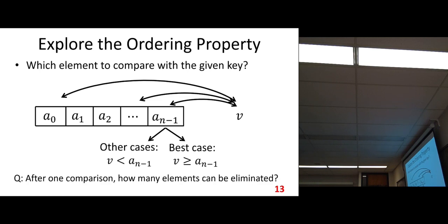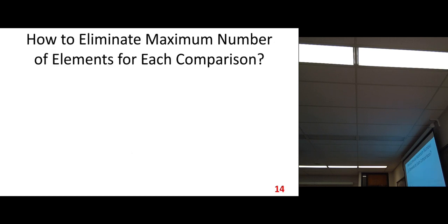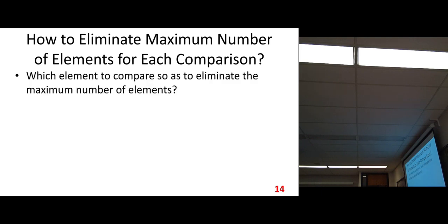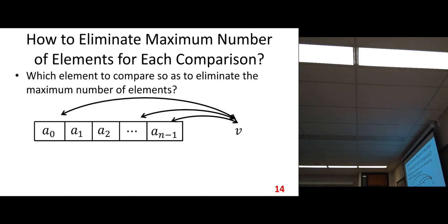Let's look at elimination. We reduce the problem size, and at the same time we do elimination. Our goal is to eliminate the maximum number of elements for each comparison. This is another view of the problem: we want to maximize the number of eliminations. We try to maximize the number of elements eliminated for every comparison.